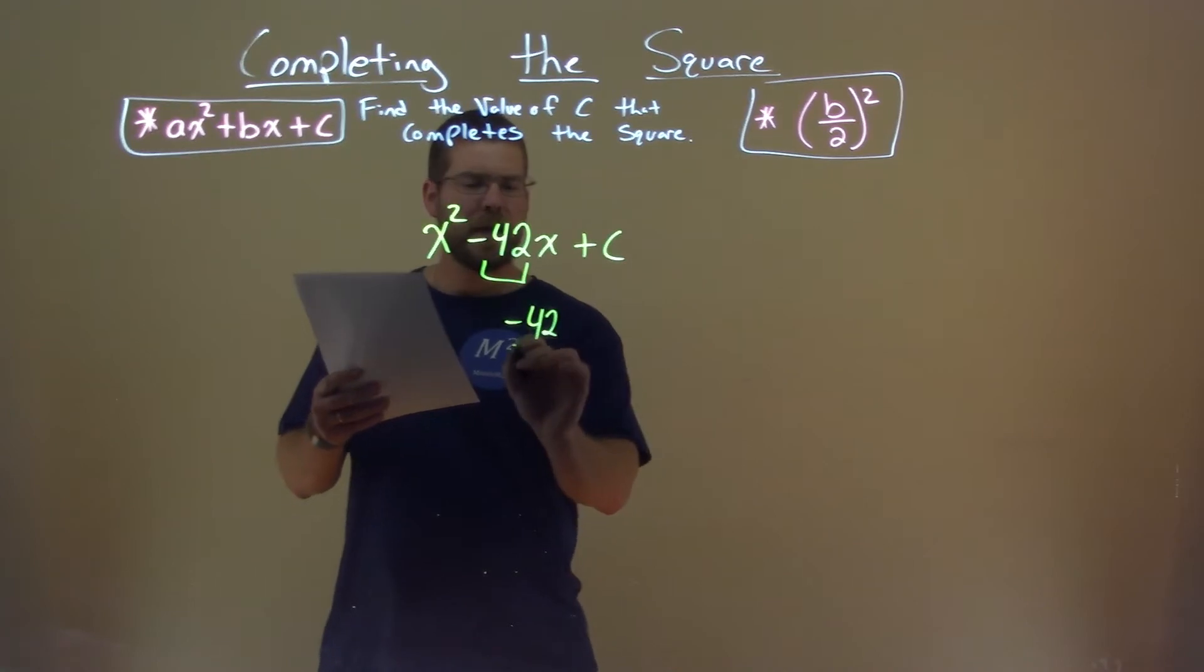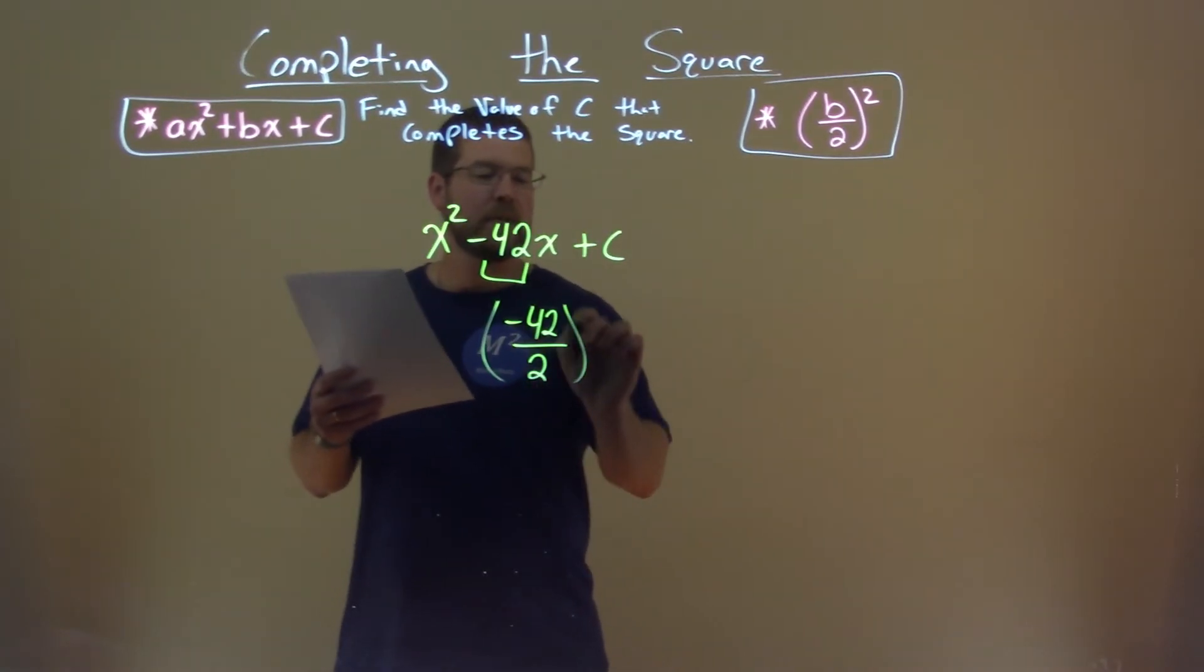We take negative 42 and we're going to divide that by 2, and we're going to square it.